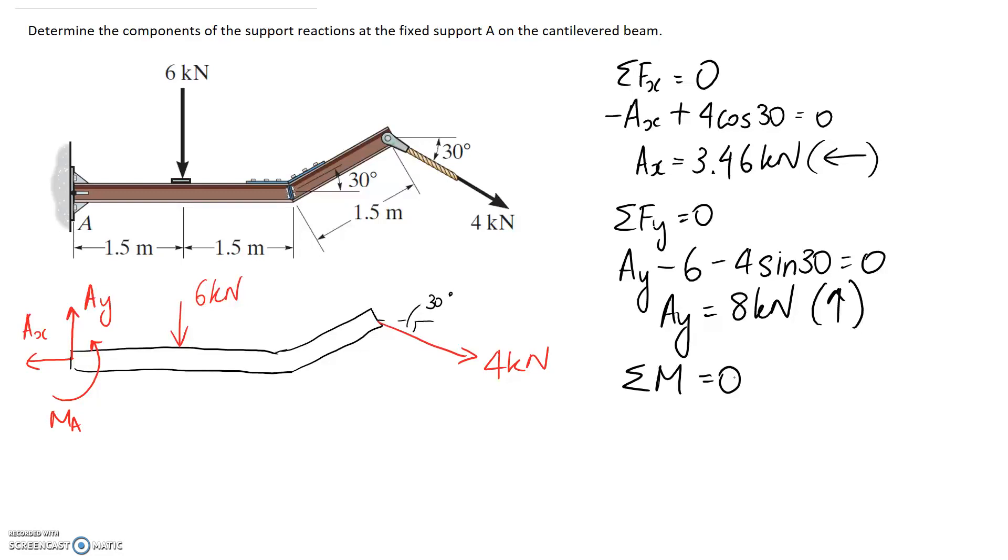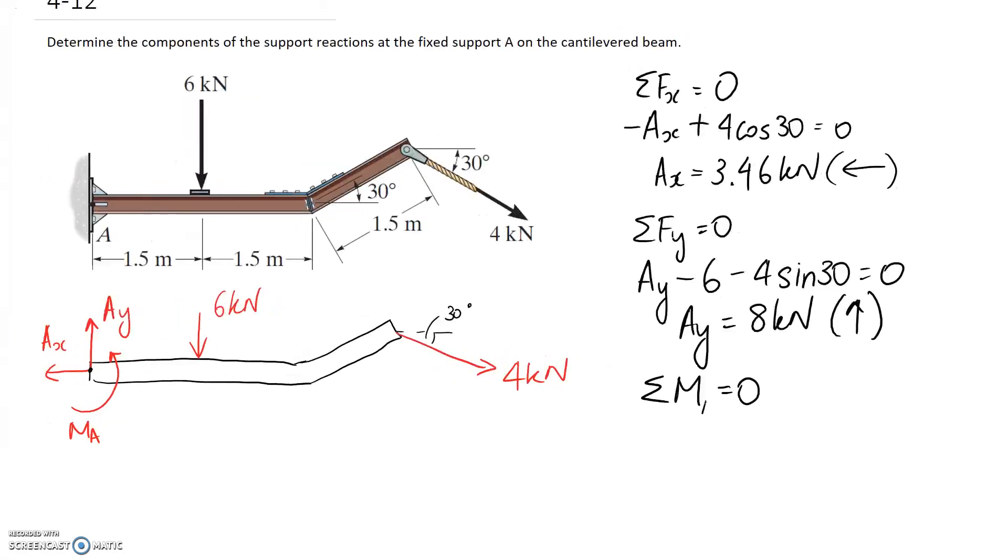I think the easiest place to sum about is A just because it knocks out two forces because the line of action for both of these is going to act directly through point A so it's not included. But if you want to sum somewhere else you can of course do that.